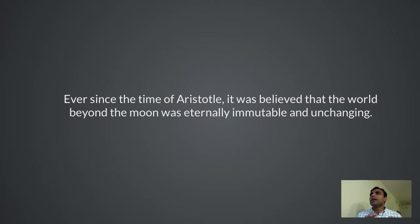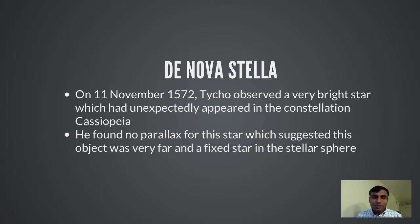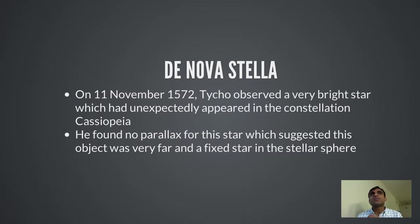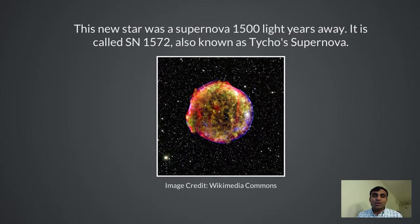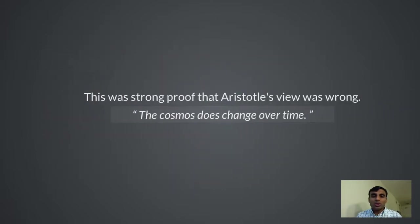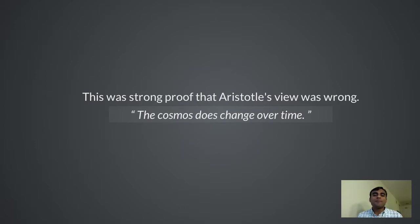Ever since the time of Aristotle, it was believed that the cosmos beyond the moon was constant, immutable, and not changing. However, in 1572, Tycho Brahe observed something amazing — a star had just appeared in the constellation Cassiopeia, a new star never seen before in the history of mankind. He observed parallax for this object over several months and found no parallax, meaning it was very, very far away. He wrote about this in his book Nova Stella in 1573. We now know this was a supernova 1,500 light years from Earth called SN 1572, also known as Tycho's Supernova — proof that Aristotle's view was wrong and that the cosmos does change over time.